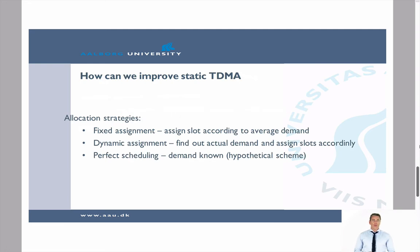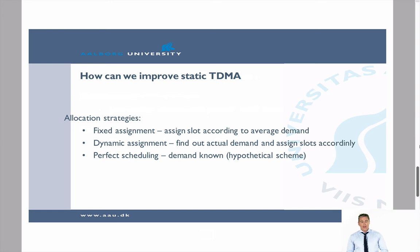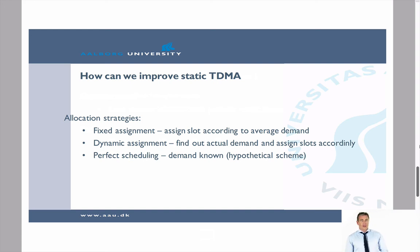So how can we improve static Time Division Multiple Access? There are different allocation strategies. One is fixed assignment but making the slot assignment according to average demand, so if some users need more capacity than others, we assign accordingly. We can also move closer to dynamic assignments within TDMA, finding out the actual demand on the fly and assigning slots accordingly. Finally, there is what could be called perfect scheduling, where we know the demand in advance and assign time slots accordingly — though this is a hypothetical scheme since we usually do not know demand beforehand.